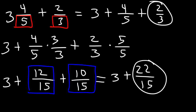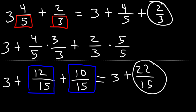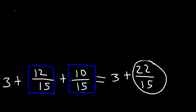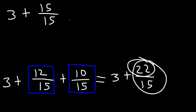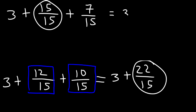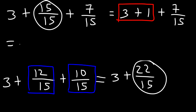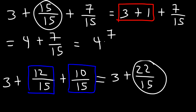Now I have an improper fraction, so I need to do something about that. Let's decompose 22 over 15 into two smaller fractions, one of which is 15 over 15. 22 minus 15 is 7, so the missing fraction is 7 over 15. Now 15 divided by 15 is 1, and 3 plus 1 is 4. So this is going to be 4 plus 7 over 15, which gives a final answer of 4 and 7 fifteenths.